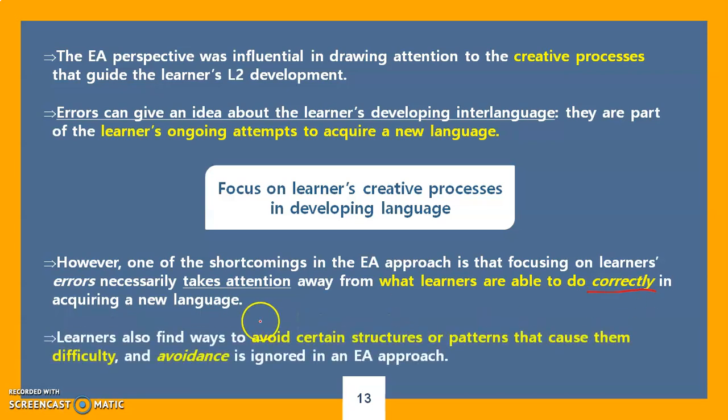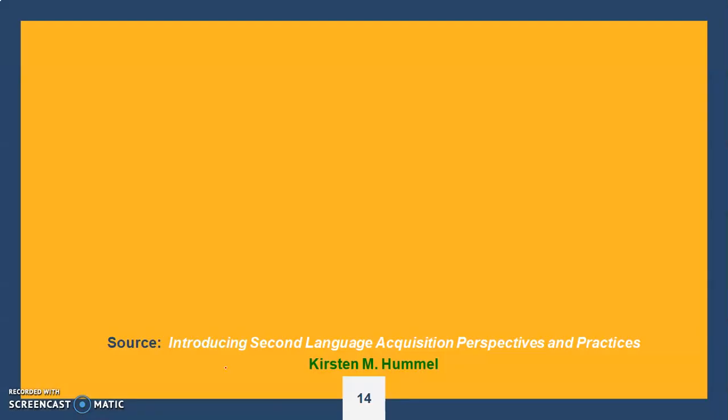Learners also find ways to avoid certain structures or patterns. Sometimes they might have a difficulty, however they avoid it so they don't do an error. And you know from your own experience how sometimes you might change the word in order not to use it wrong, or you may change the whole sentence structure, use different words in order not to make a mistake in the structure. This is the error analysis. We are done with these two theories. Next week I will begin with other theories. Thank you for listening and good luck.